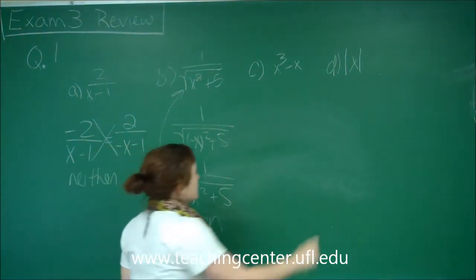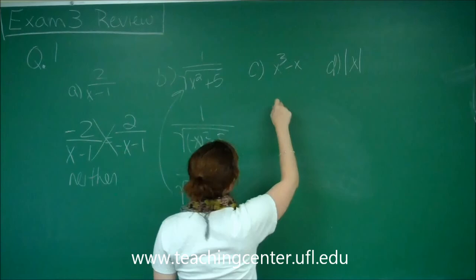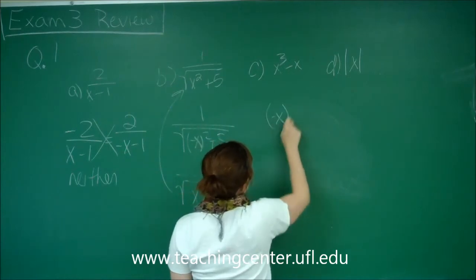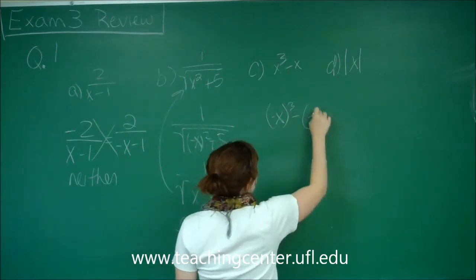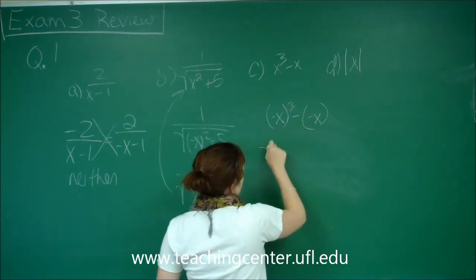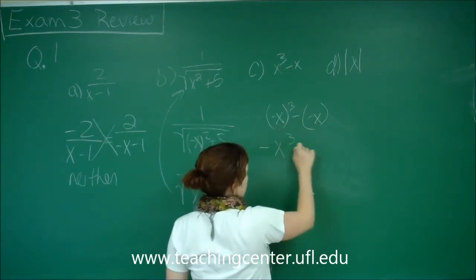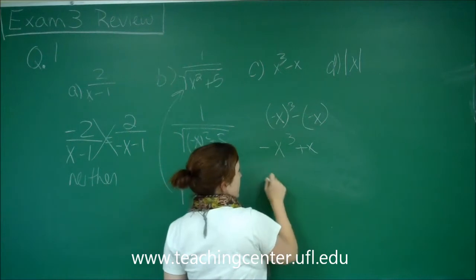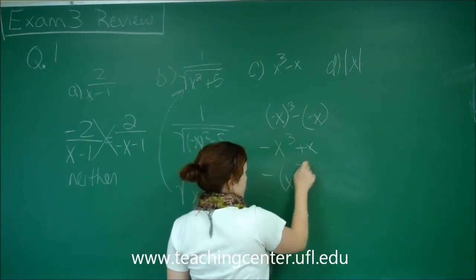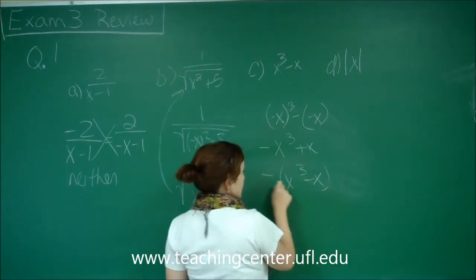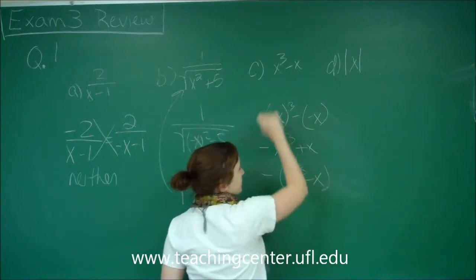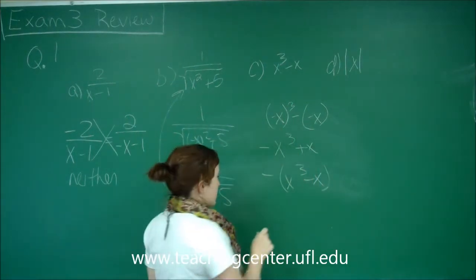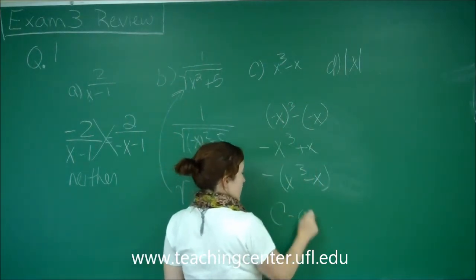Now function C, when I plug in a negative, I get negative x quantity cubed minus negative x. So what this gives me is a negative x cubed plus x. So I can factor out a negative there, and that gives me x cubed minus x. And so this is a negative times our original function, f of x. So that means that C is odd.